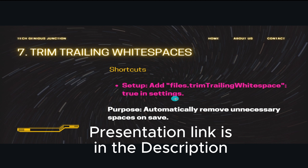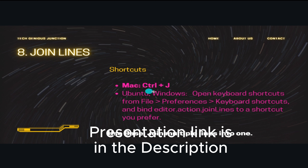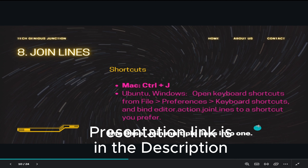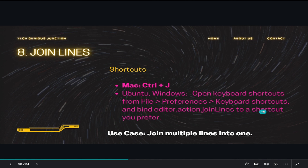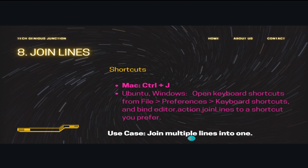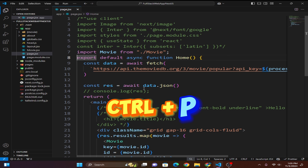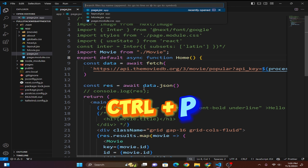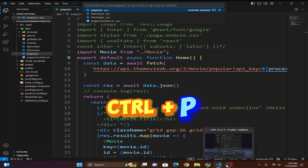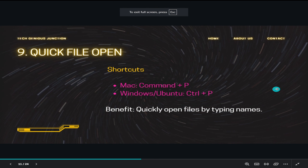You can join lines by going to File > Preferences > Keyboard Shortcuts and assigning a key. The next shortcut is Quick File Open — press Ctrl+P and it will open a quick file picker so you can navigate to any file rapidly.